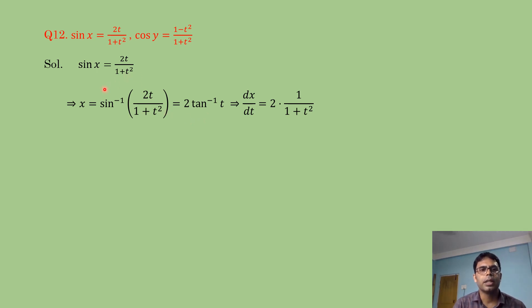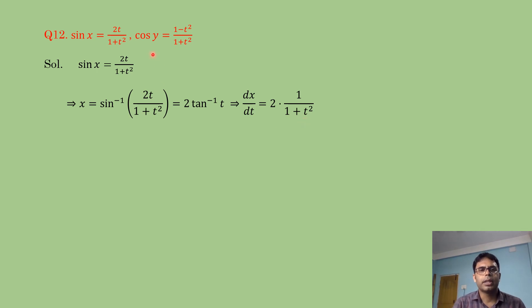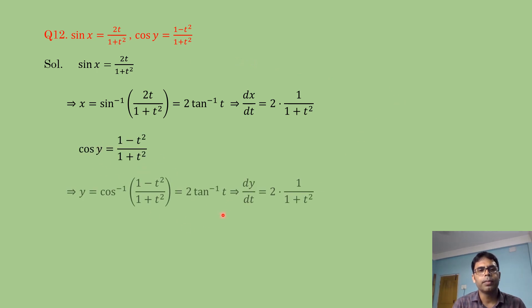So x = 2·tan⁻¹t, giving dx/dt = 2 × 1/(1+t²). For the second equation, cos y = (1-t²)/(1+t²), so y = cos⁻¹((1-t²)/(1+t²)) = 2·tan⁻¹t by the same formula.